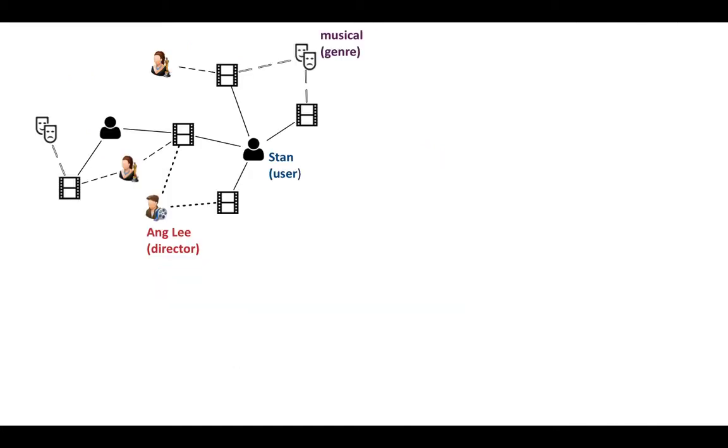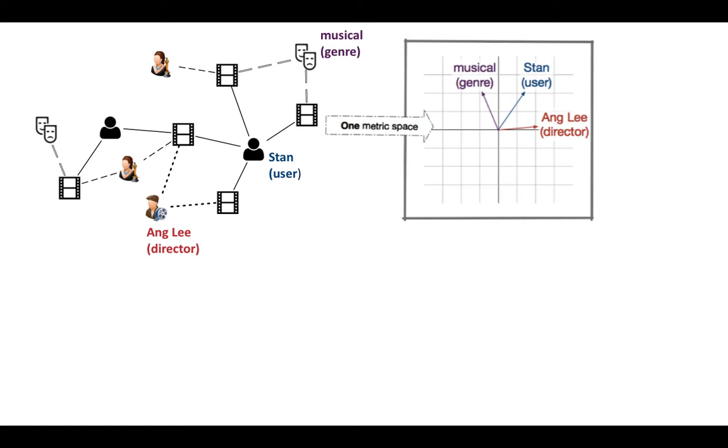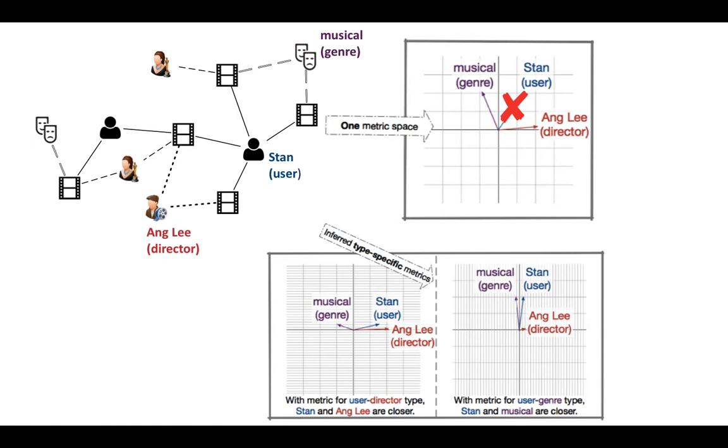In the previous example, if all nodes were embedded to one metric space, Stan would be close to neither musical nor NB due to the dissimilarity between musical and NB. This results in information loss in the embedding learning. We deploy heterogeneous metrics to elevate this problem.